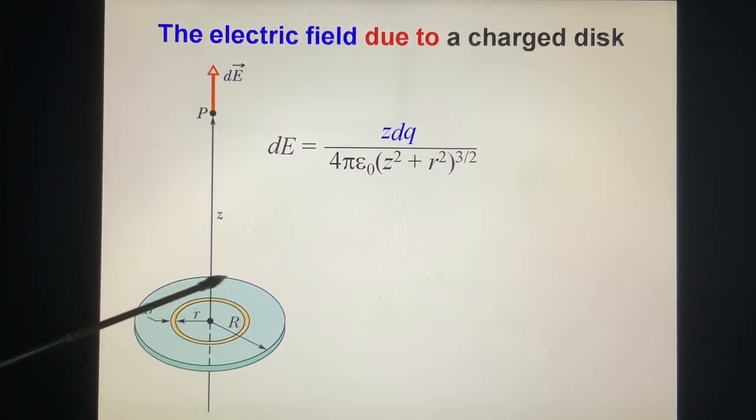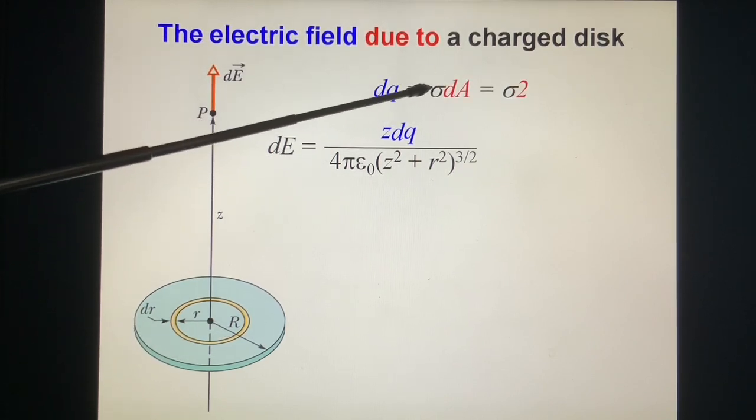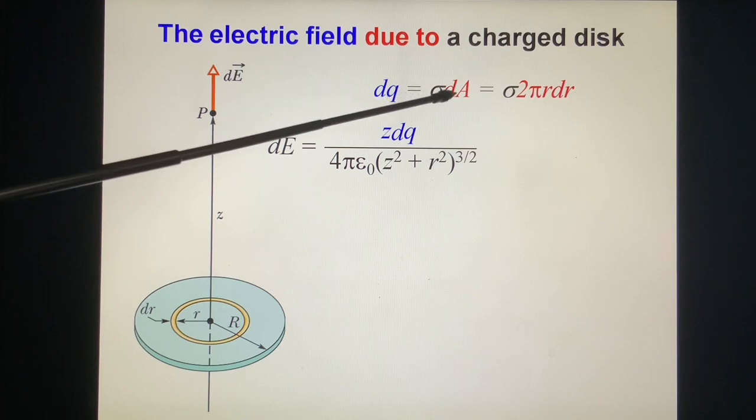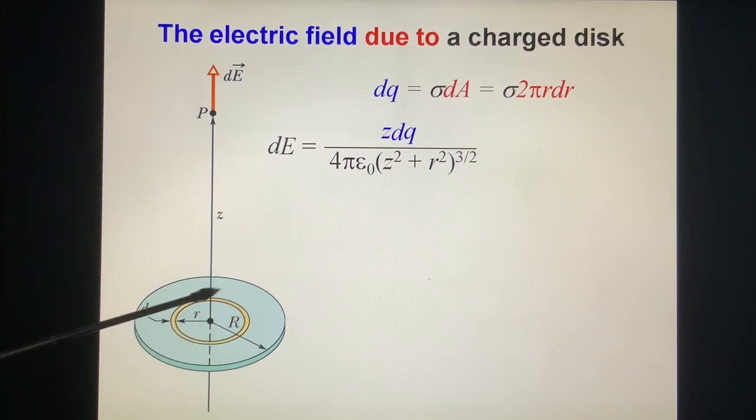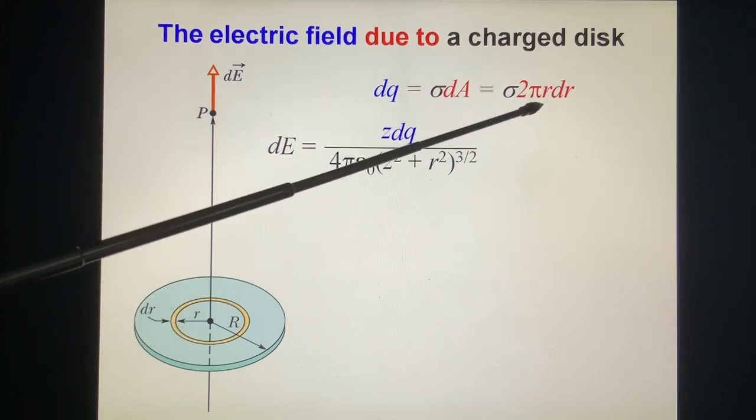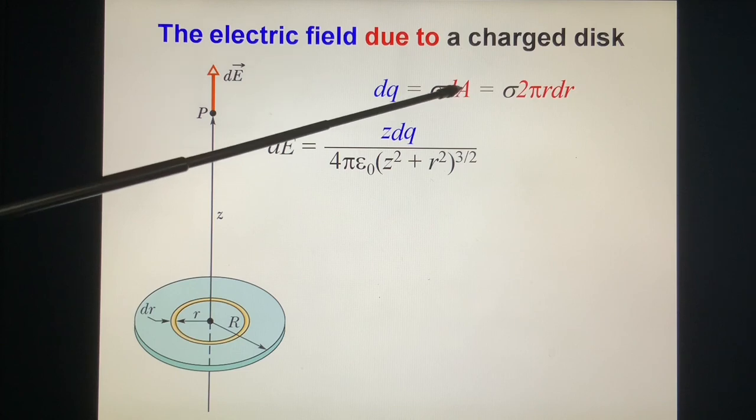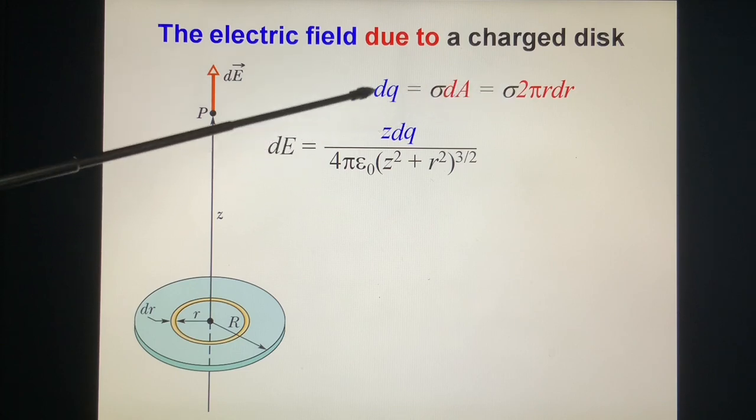dQ on this ring is equal to surface charge density σ times its area, surface area. And its surface area equal to the circumstances of the ring 2πR multiplied by its width dR. This is area. So this is σ dA is the dQ.